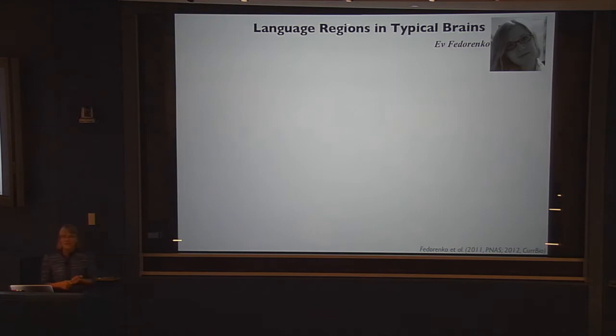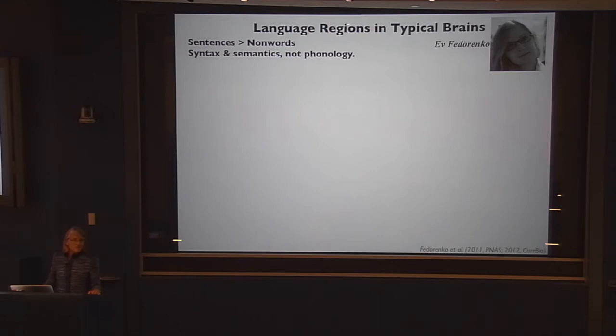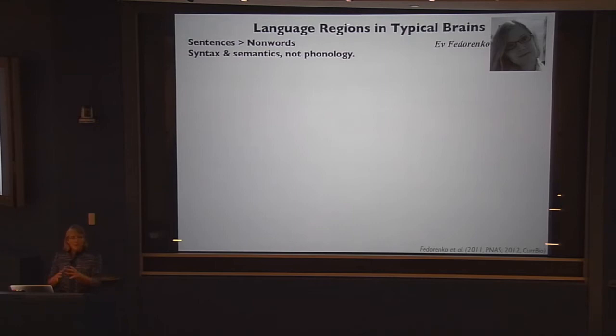Now let's talk about language regions — this is work with Ev Fedorenko. Actually, this work essentially is Ev Fedorenko. About five years ago, she started doing functional MRI studies in typical subjects looking at language parts of the brain. Language parts of the brain have been known for 200 years since Broca and Wernicke, so there's no surprise about where they are. But within the functional imaging literature, what she did that most people don't do is look at individual subjects and identify regions in each subject individually.